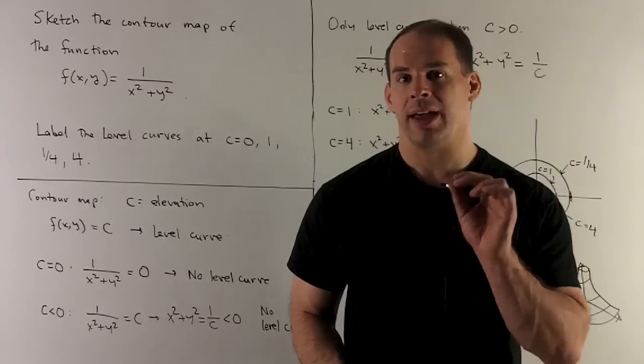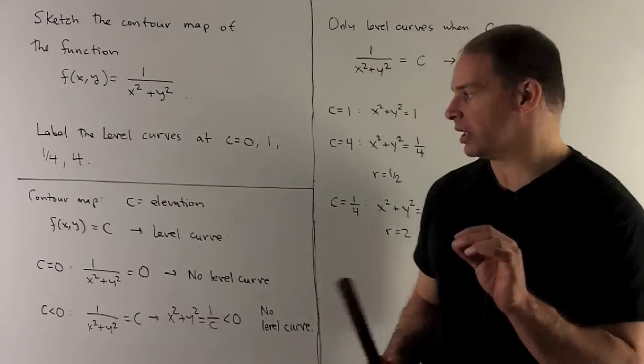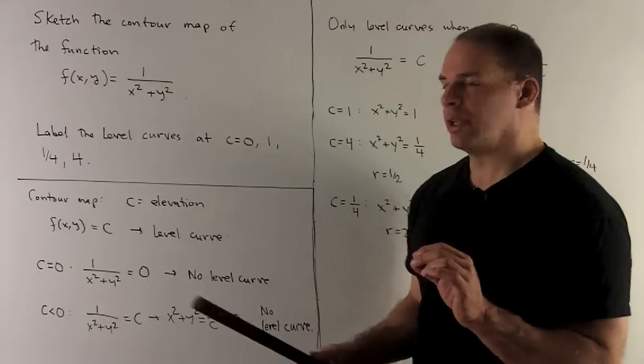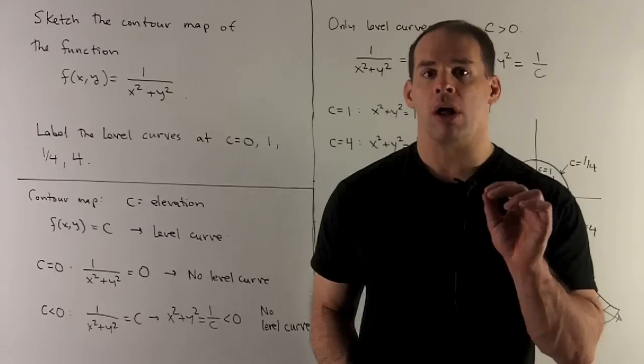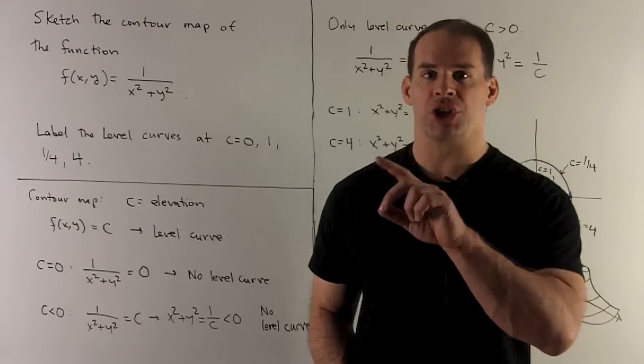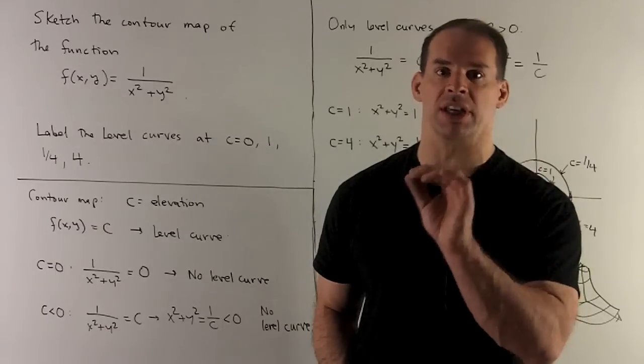How do we proceed? We're going to take our function, set it equal to c. That's going to give us what's called a level curve - those are all the points of our function that take on the same value. That's the whole point of setting the function equal to c.